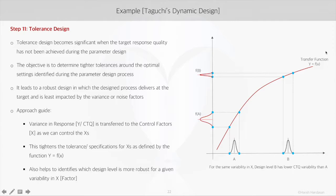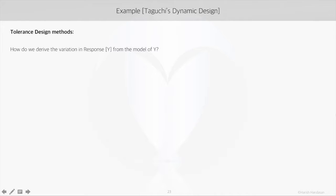This also helps to identify which design level is more robust for a given variability in x. In this figure, we see that Design A, based on the y equals f(x) relation, leads to higher variation in y compared to Design B. In the case of Design B, the corresponding variance in y is much less. So for the same variability in x, Design B will result in a robust y.